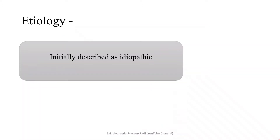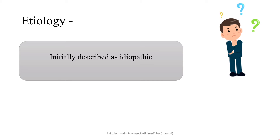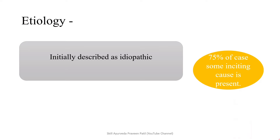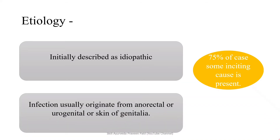Coming to the etiology — it was initially described as idiopathic, meaning we didn't know the cause. But nowadays, 75% of cases have some inciting cause present. In the remaining 25%, no cause can be traced. Infection usually originates from the anorectal or urogenital tract, or the skin of the genital area. Any scratches or tears in the anorectal region, urinary tract infections, or skin bacterial infections may precipitate Fournier's gangrene.